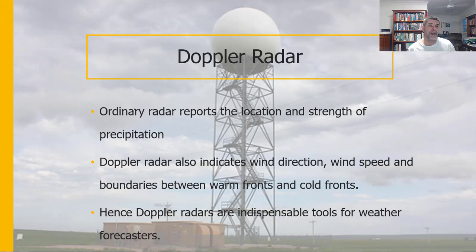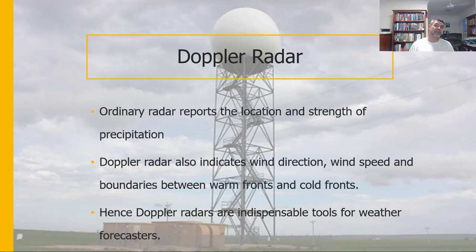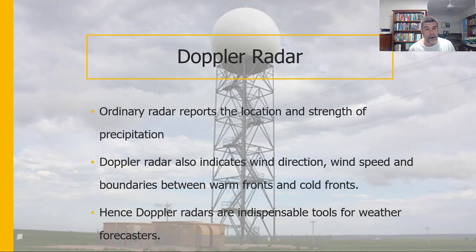This is a Doppler radar. Radar uses the electromagnetic spectrum to gather data on a range of different things. We tend to get from radars the locations and strength of things like rainfall and snowfall. The Doppler radar gives us additional information on top of that, including wind speeds, wind directions, and the boundaries between warm and cold fronts. This is very important when we're trying to predict changes in weather patterns — where they might be coming from and potentially how long they're going to take to arrive.